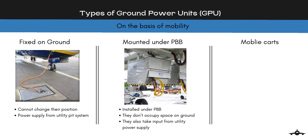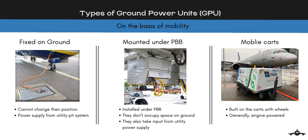An engine causes too much vibration that can harm the passenger boarding bridge. Mobile GPUs are built on carts with wheels. They do not need lengthy cables because they are parked close to an aircraft and are generally engine powered, though nowadays they are being manufactured to run on utility power supply due to environmental factors. Some modern mobile GPUs are also battery powered — they can be charged once their battery is drained, and this type is commonly used at airports for supplying power to aircraft parked on remote stands.